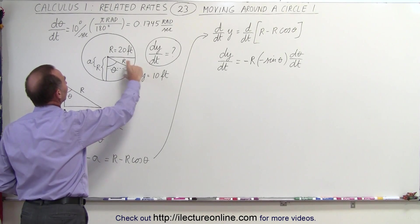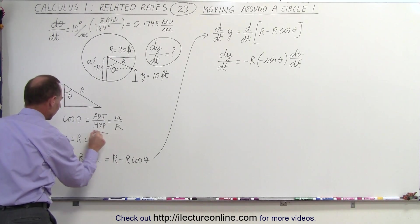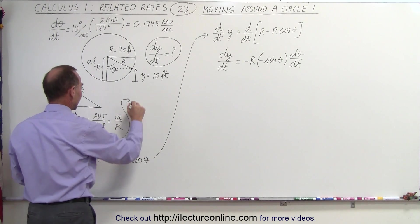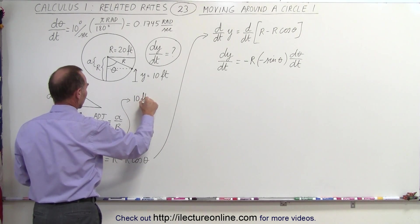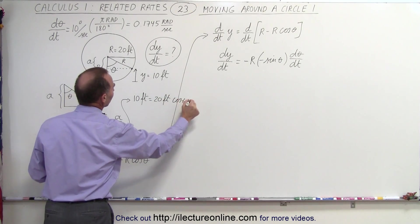Well, when this is 10 feet, and of course a is 10 feet as well, which means going back to this equation right here, I can say that 10 feet is equal to 20 feet times the cosine of theta.